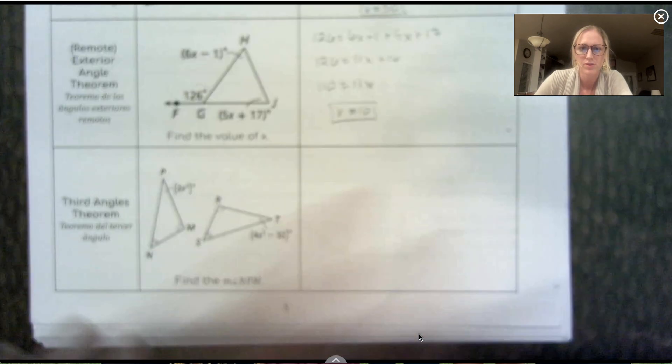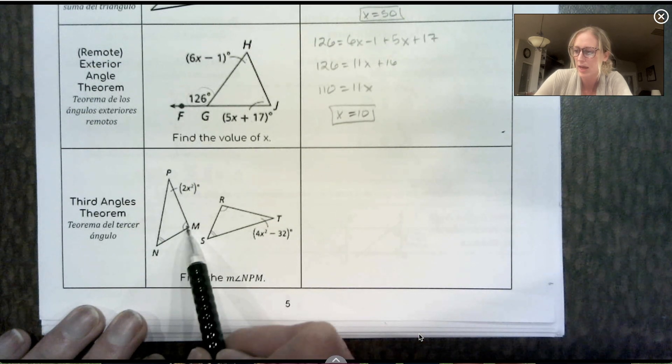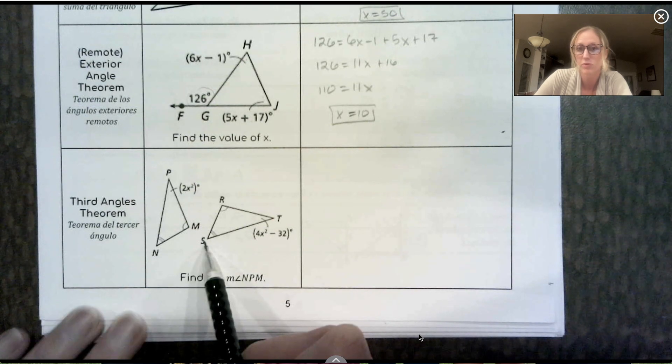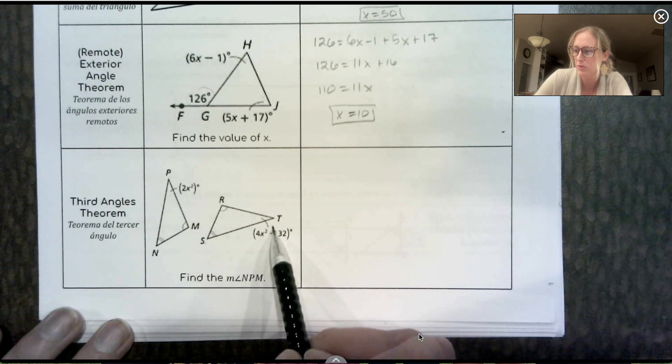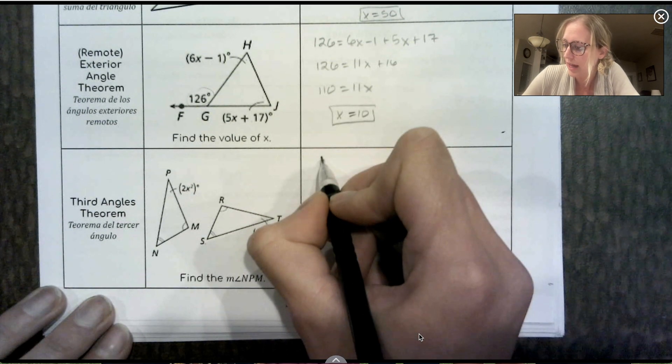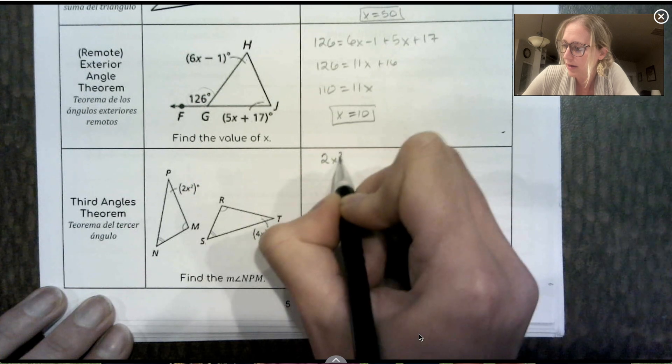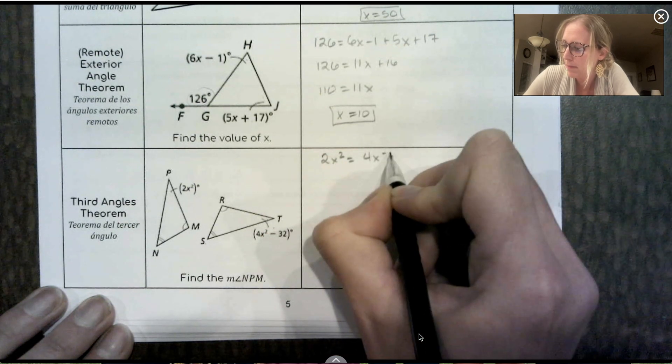So we can see from the picture we're given that M is the same as R and N is the same as S. So that means the third angle by that third angle theorem has to also be equal. So P must be equal to T. So we're going to say 2x squared is equal to 4x squared minus 32.